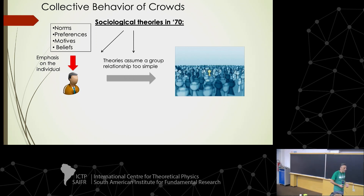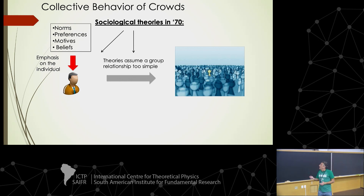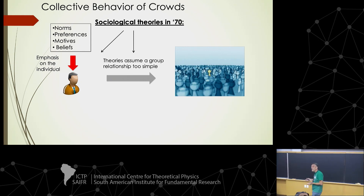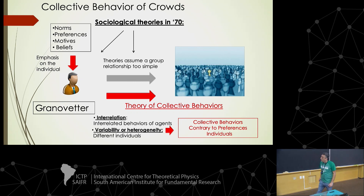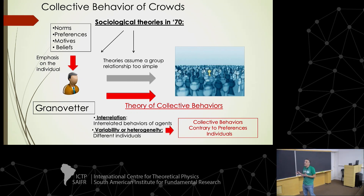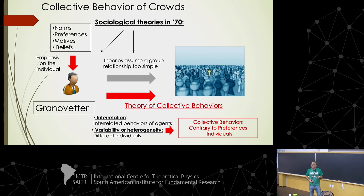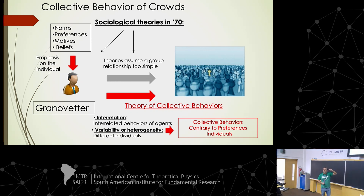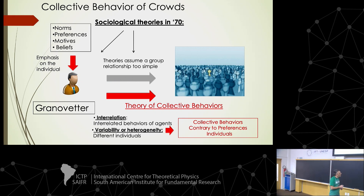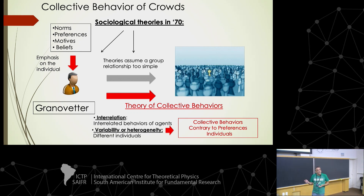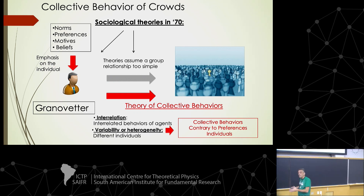These theories assumed that individual features can explain the behavior of a crowd, with the implicit hypothesis that group relationships build up in a very simple or linear way. What Granovetter said is that a theory of collective behavior is needed, because the behavior of a group depends strongly on the interrelations between individuals and not specifically on individual details. We have to focus on how persons connect to each other and how heterogeneity could play an important role in building collective behavior.